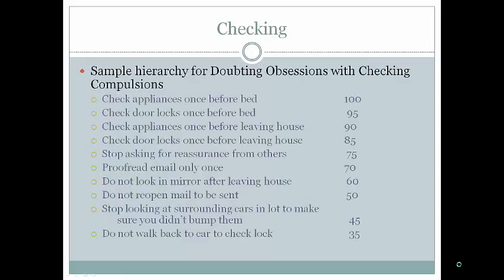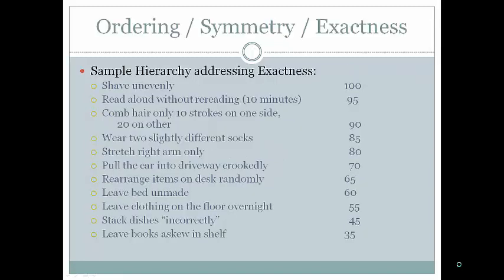Higher on the hierarchy: wash for only 30 seconds; take out the trash then eat dinner without washing hands; touch several children at daycare then touch things at home; go to bed without showering; sleep with shoes in bed. Each person has their own individualized hierarchy. For someone with doubting obsessions and a checking compulsion, the hierarchy includes items like: do not walk back to the car to check if it's locked; do not reopen mail before sending; check locks only once before leaving the house or bed.